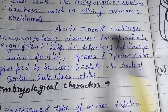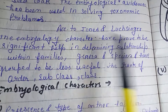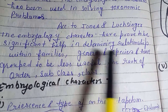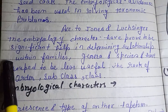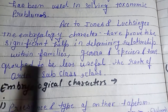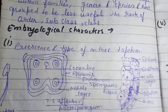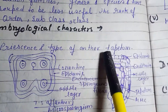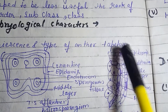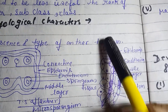Embryology has proved to be significant help in determining relationships among families, genera, and species, but has proved to be less useful at the rank of subclass and class. Embryological characters include the type of anther and tapetum. The function of tapetum is to provide nourishment to the microspore mother cell.